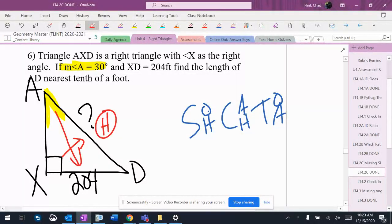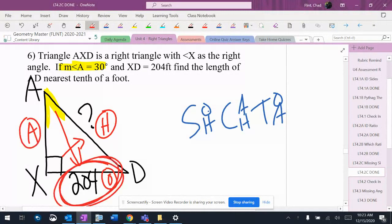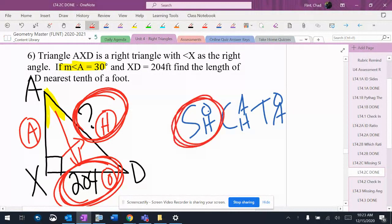Hypotenuse is over there. Opposite is over there. Adjacent is over there. I know the opposite. I would like to know the hypotenuse. So that means this is a sine problem.